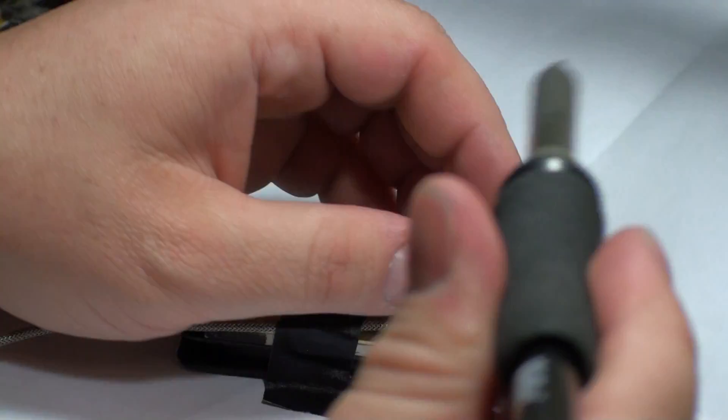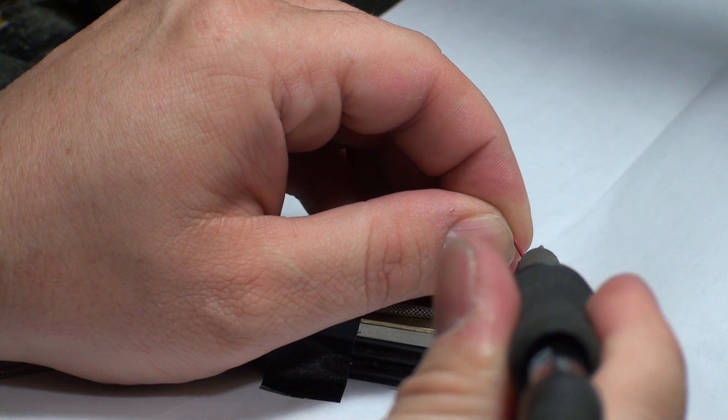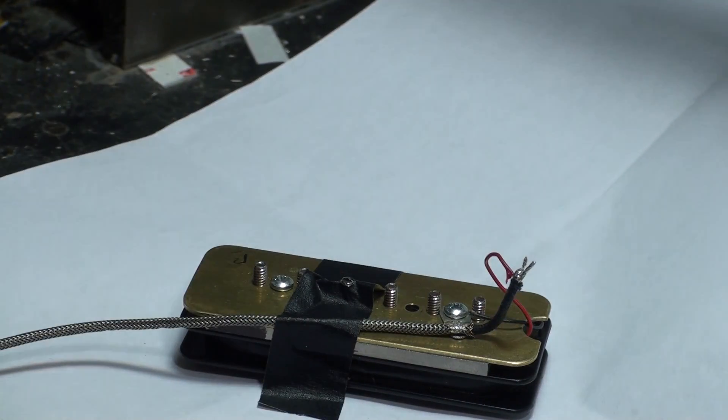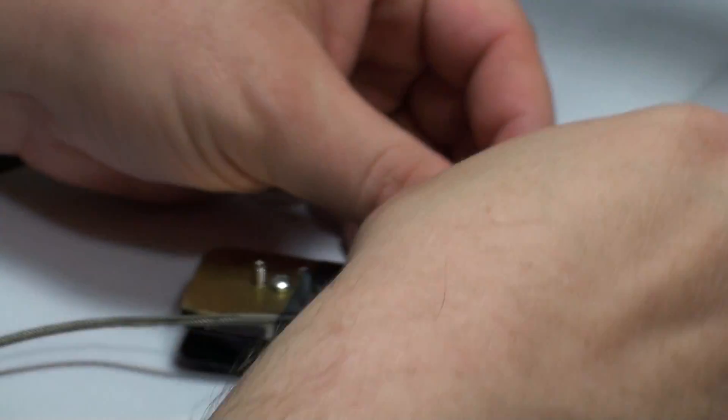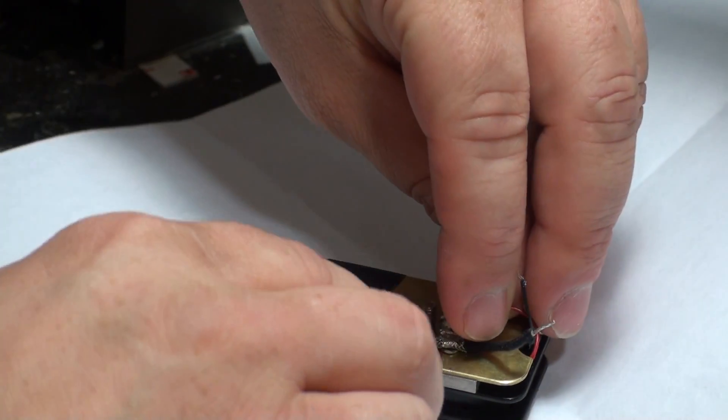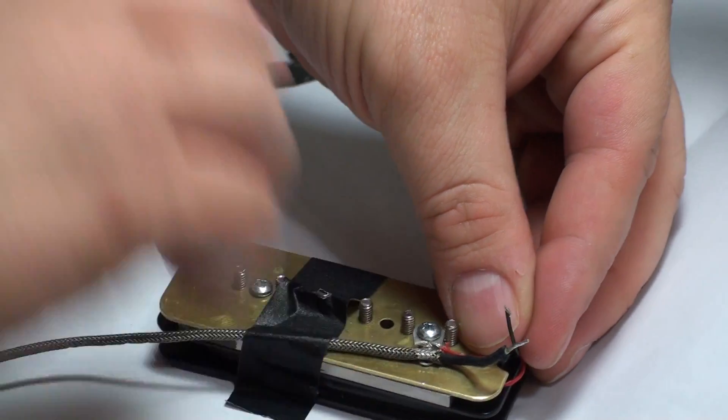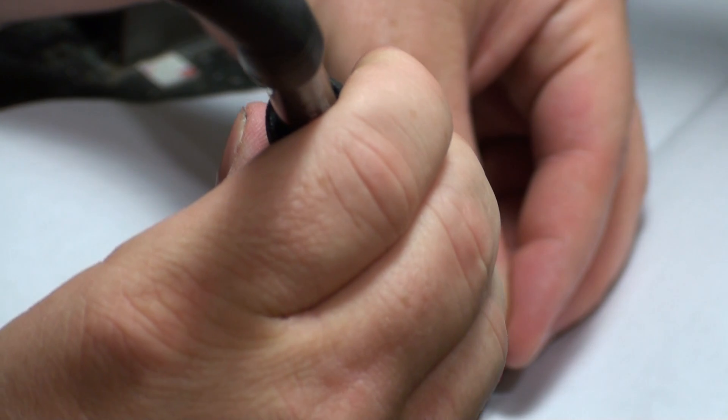Then we want to unsolder the red lead. And basically what we're going to do is switch their positions.